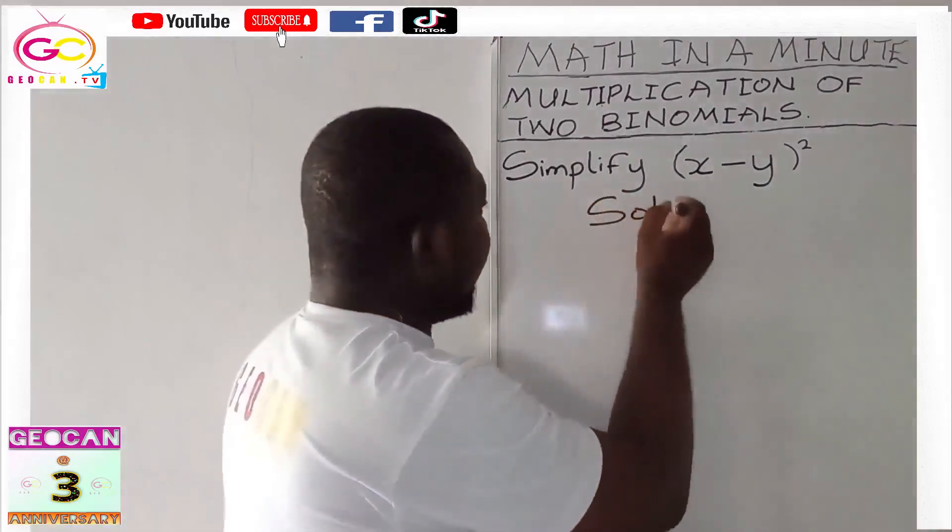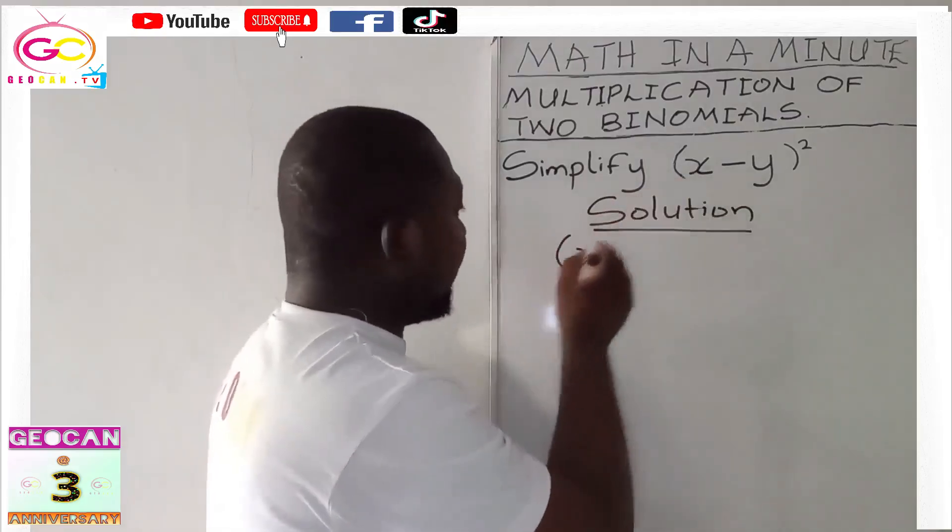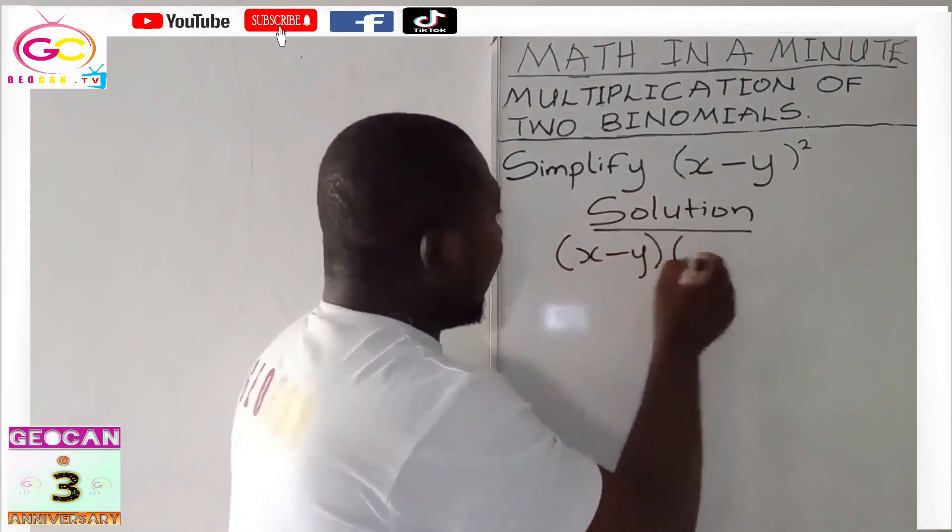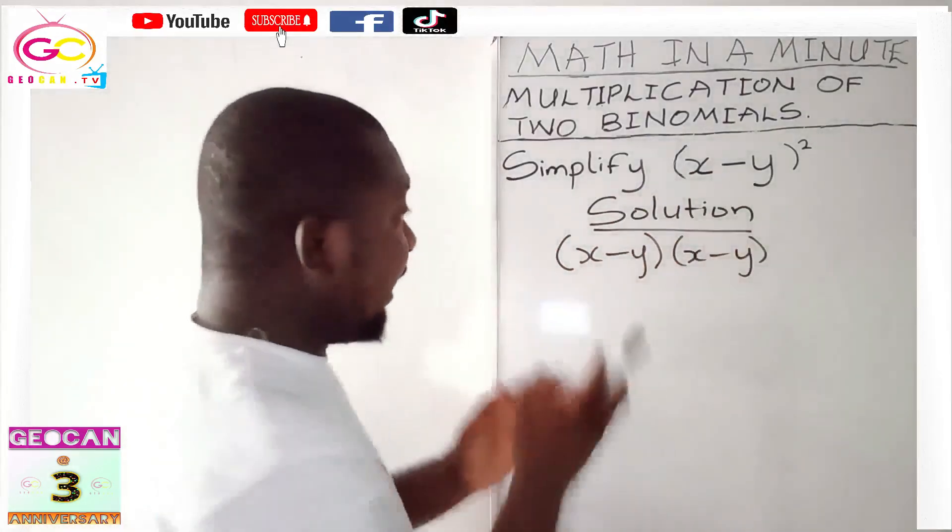So let's have our solution neatly written over there. Nicely placed. Let's multiply this twice. So we have (x - y)(x - y), multiplying twice. We write it in this form.